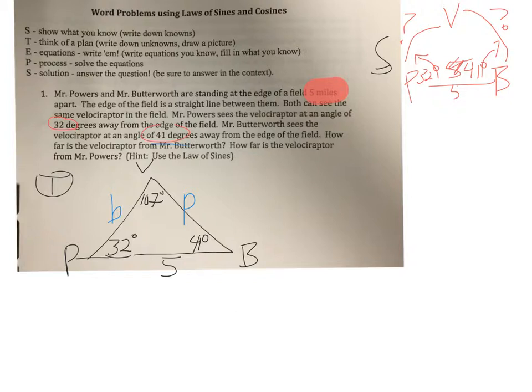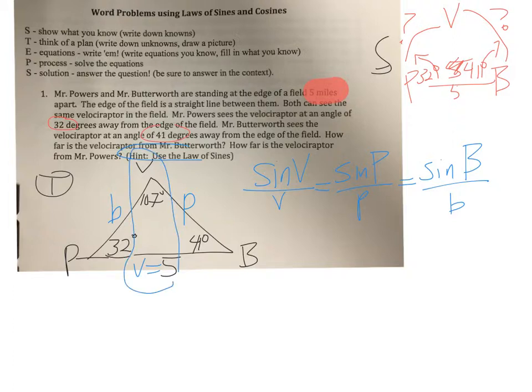Equations. Given that this says, hint, use the law of sines, I should probably write down the law of sines based on this problem. So that would be sine V over V. Maybe I'll label that side V also. Equals sine P over P equals sine B over B. I also happen to notice that I have both pieces for V, but not for the other ones.